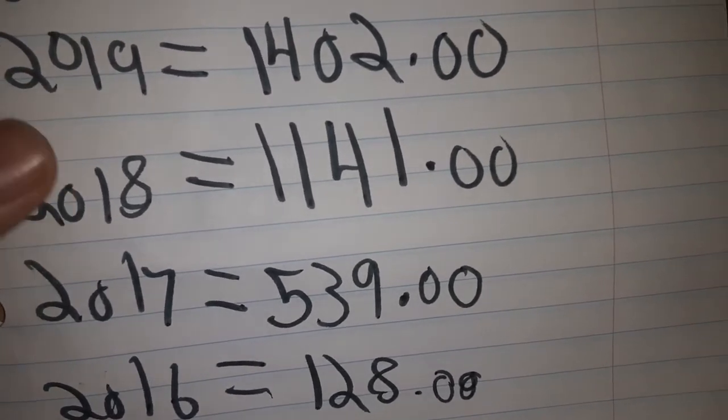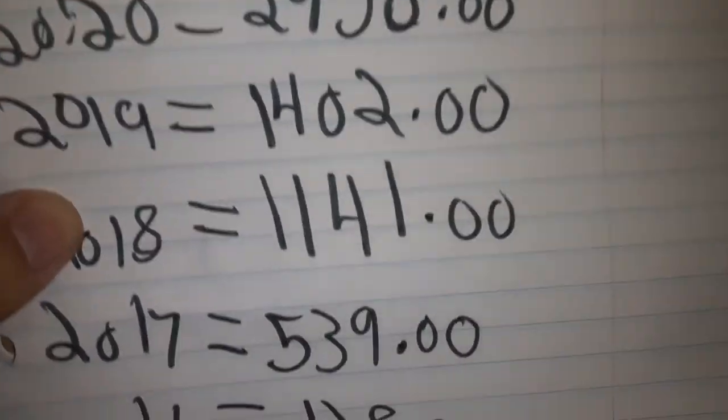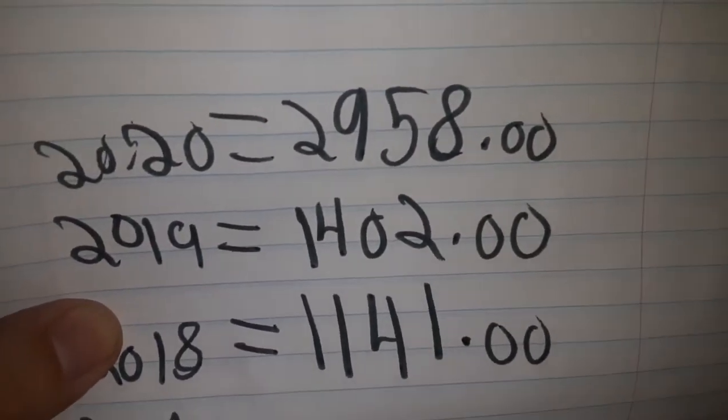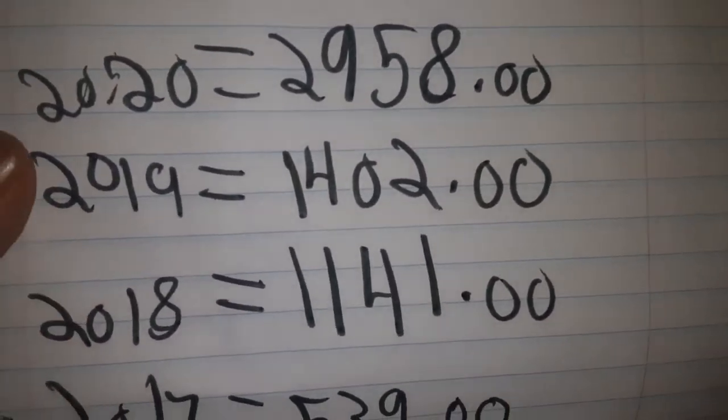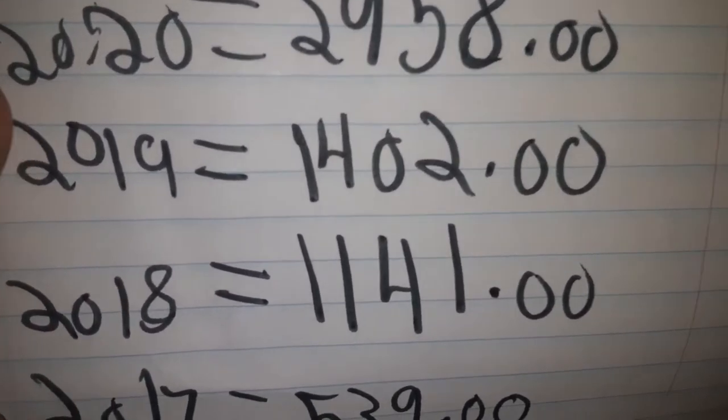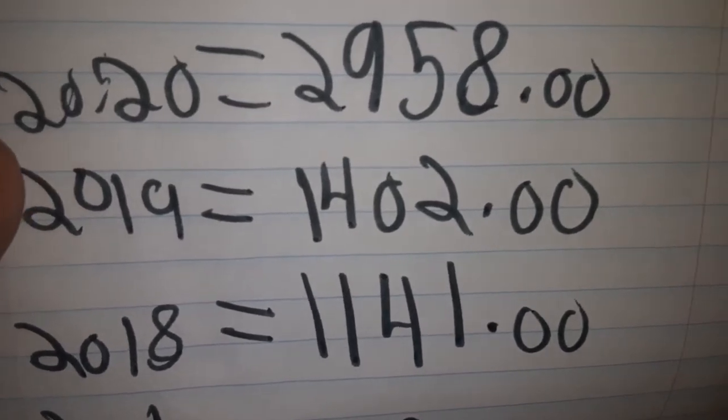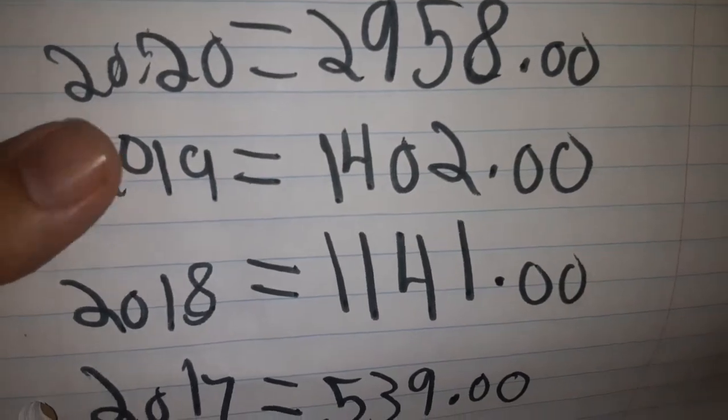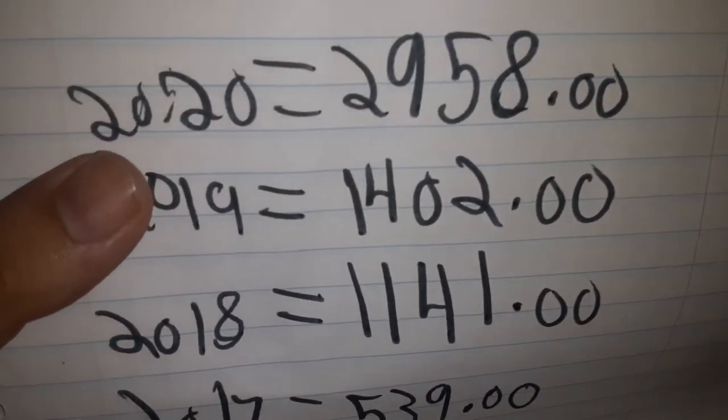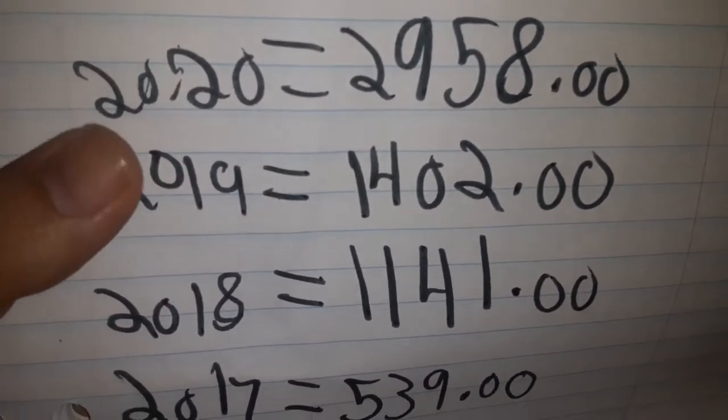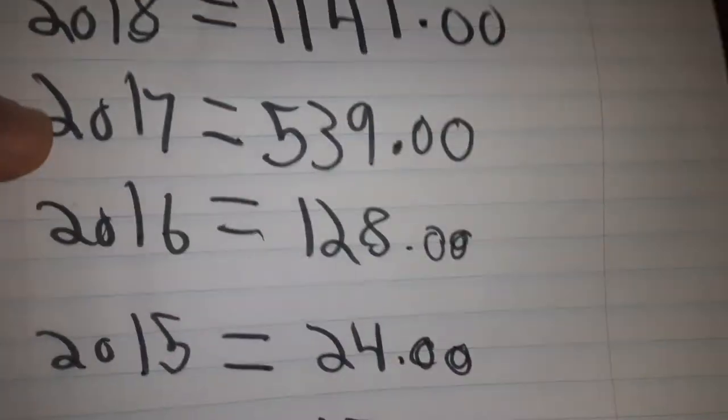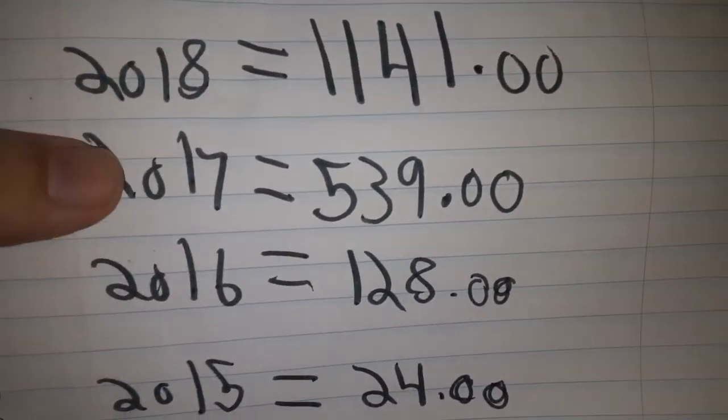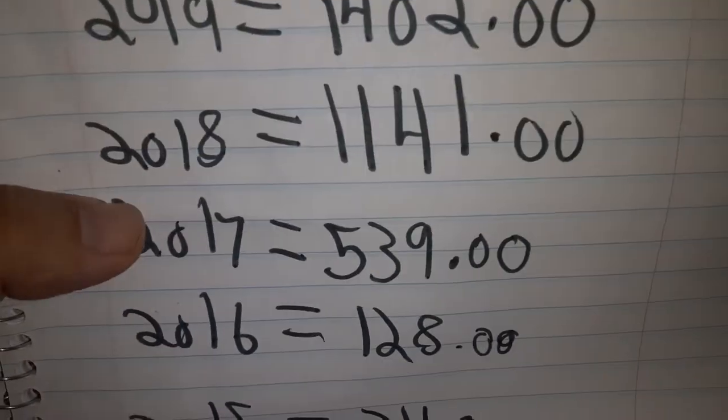And then last year I got $2,958 around there. So that's not including PayPal donations. Last year I actually got the most PayPal donations so far too, so that was well over like $500 in PayPal donations, which is like, I made more in PayPal than I made on YouTube in 2017, so that's cool.